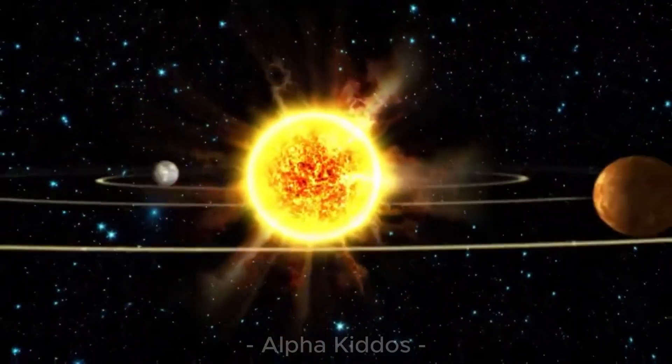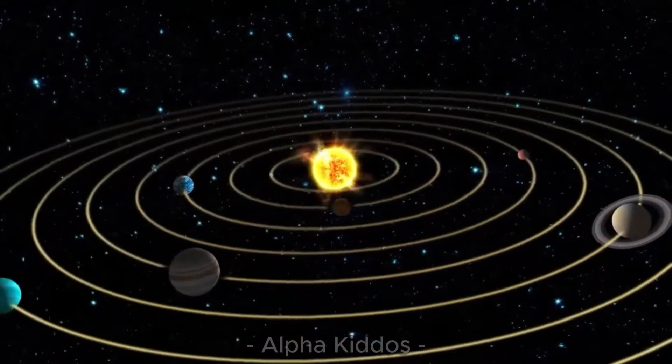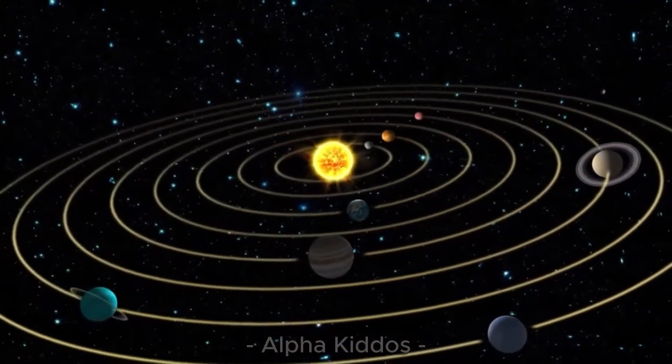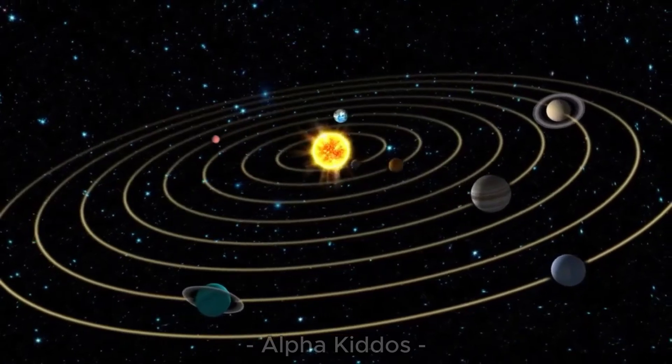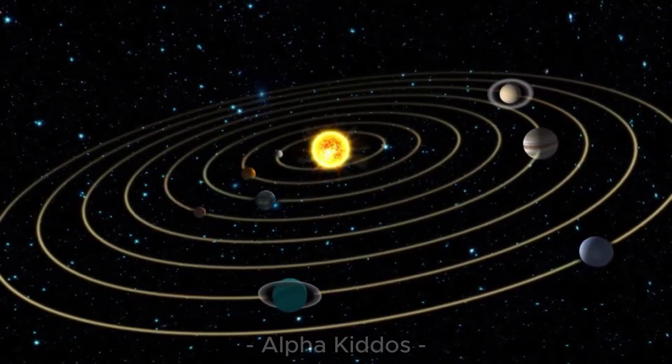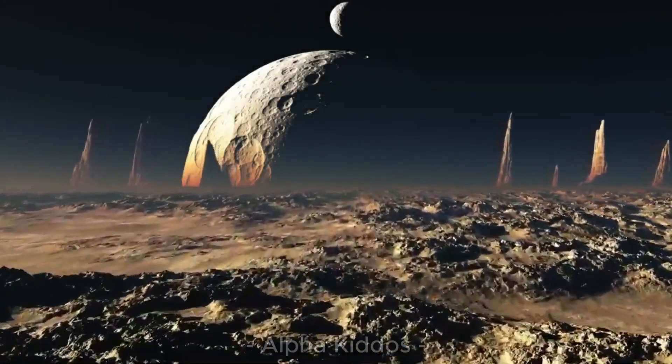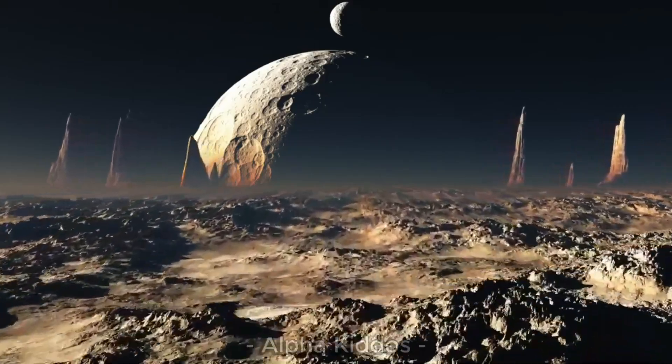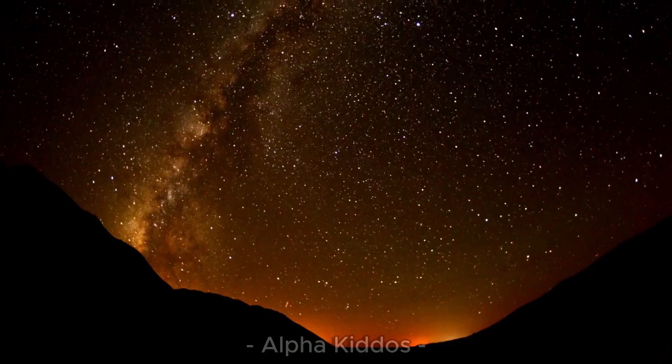Hi kids, welcome to Alpha Kiddos channel. Today we're flying into outer space to explore the eight planets in our solar system, from hot Mercury, cloudy Venus, our Earth, all the way to Neptune far at the edge. Each planet has fun secrets to discover. Let's join this adventure because so many space facts are waiting for us.